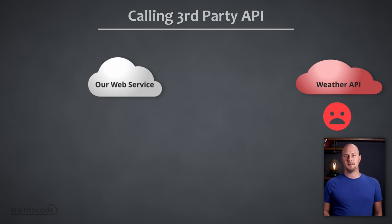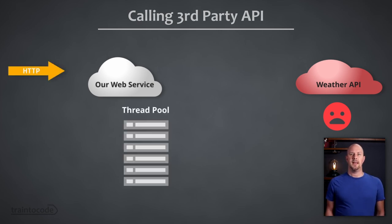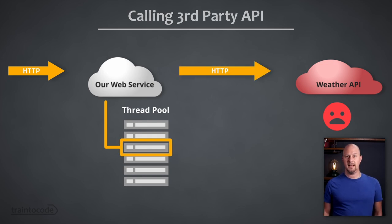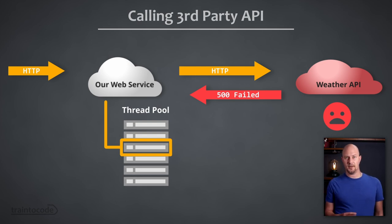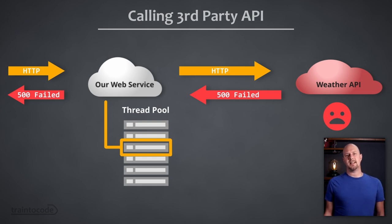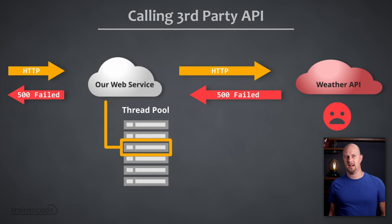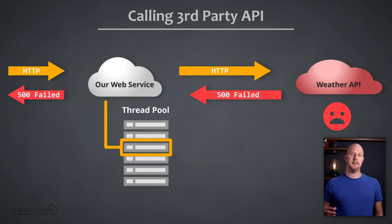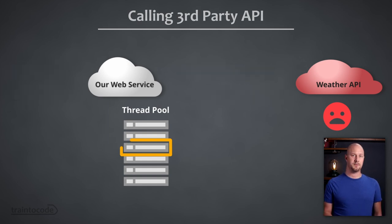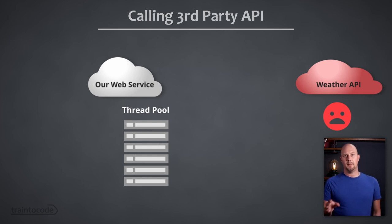There are two kinds of unpredictable problems when making calls to external APIs: fast failures and slow responses with timeouts. Fast failures are easier to deal with. If the API call fails immediately and returns an error code, we can put a try-catch around the code, handle that failure, and report something back to the front end. It's not ideal, but the front end can display a message to the user and carry on serving other parts of the application. Crucially, because this happens quickly, our web service can return quickly and free up resources.